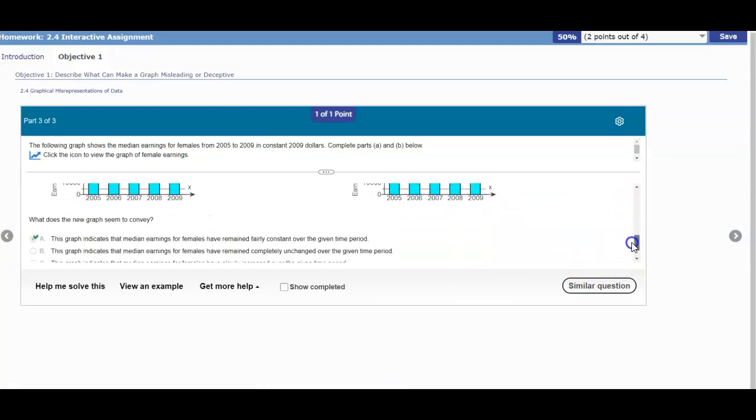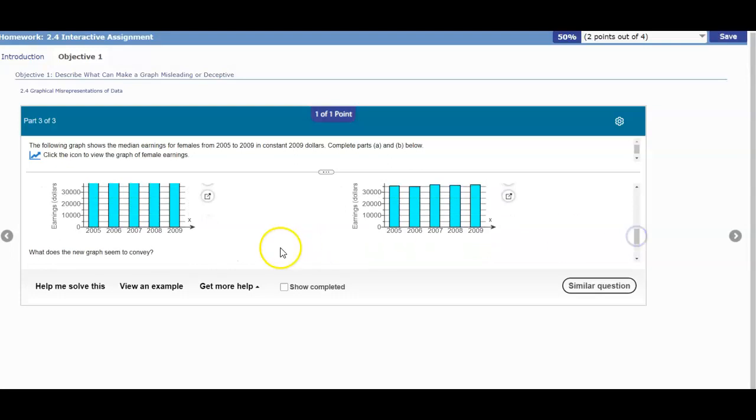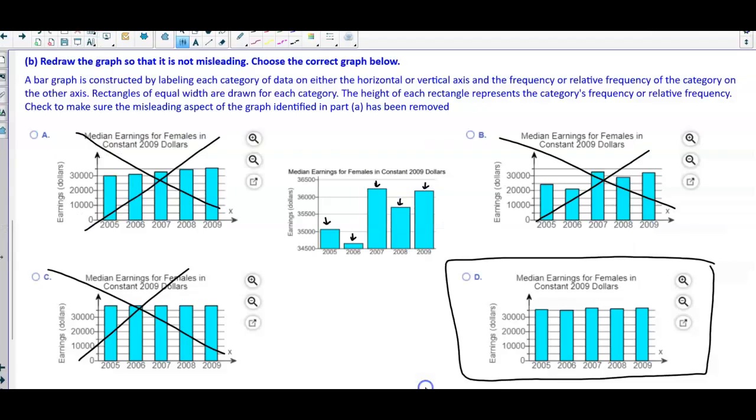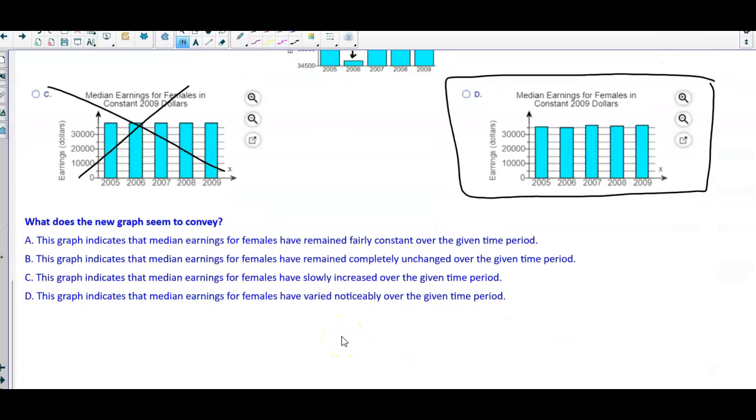The next question says, what does the new graph seem to convey? What does this graph tell us? Does it tell us that this graph indicates the median earnings for females have remained fairly constant over the given time period? Well, that looks about right. This graph indicates the median earnings for females have remained completely unchanged over the given time period. Well, it's not completely unchanged, so we're not going to include B.